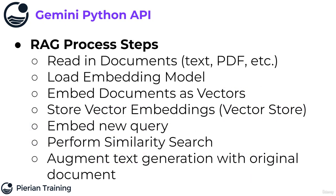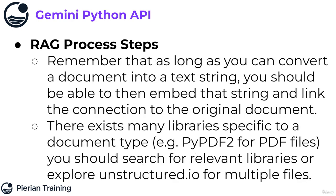Notice again the process steps. I need to read in my documents — whether they're text, PDF, PowerPoints, etc. Then I also need to load the embedding model and embed all my original documents as vectors. Then I need to store the vector embeddings — this is sometimes known as a vector store. We'll build our own just using a pandas DataFrame, but it should be noted that there are lots of services and libraries for more professional or high-performance vector stores, especially if you have hundreds of thousands of documents. Once you have your vector store embeddings of your documents, you take in a query from the user and vector embed that query. Then you perform a similarity search for the vector of the query versus the vector store of your documents to figure out what document was most similar to the query asked by the user. Then you paste that in to augment the text generation with the original document. As long as you can convert a document into a text string, you should be able to embed that string and link the connection to the original document.